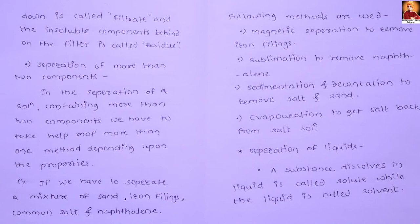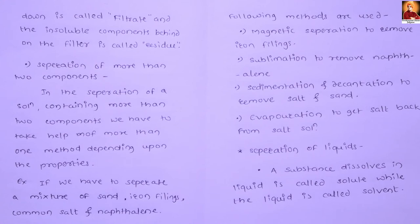For example, if we have to separate a mixture of sand, iron filings, common salt, and naphthalene — there are four components, so we must use more than two separating methods. First, magnetic separation to remove iron filings. Second, sublimation to remove naphthalene, which has the property of sublimation.